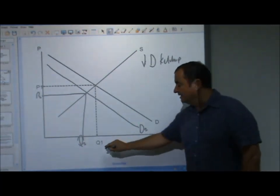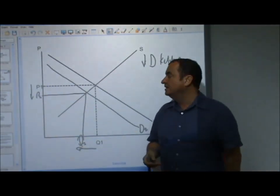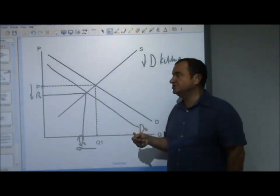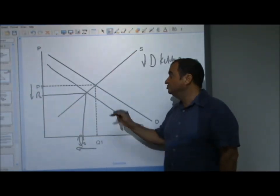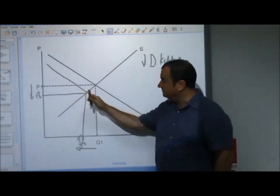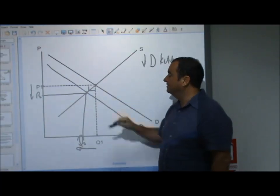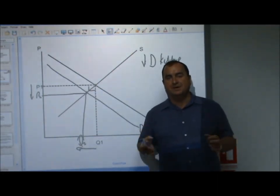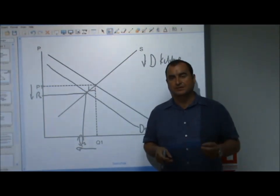When demand fell, less is now bought and sold. Because the price fell, suppliers change their quantity supplied. There is no change in supply. The supply curve has not changed. But from the supplier's point of view, there's been a change in the price and that's caused the suppliers to reduce the quantity supplied. We've moved along the supply curve.